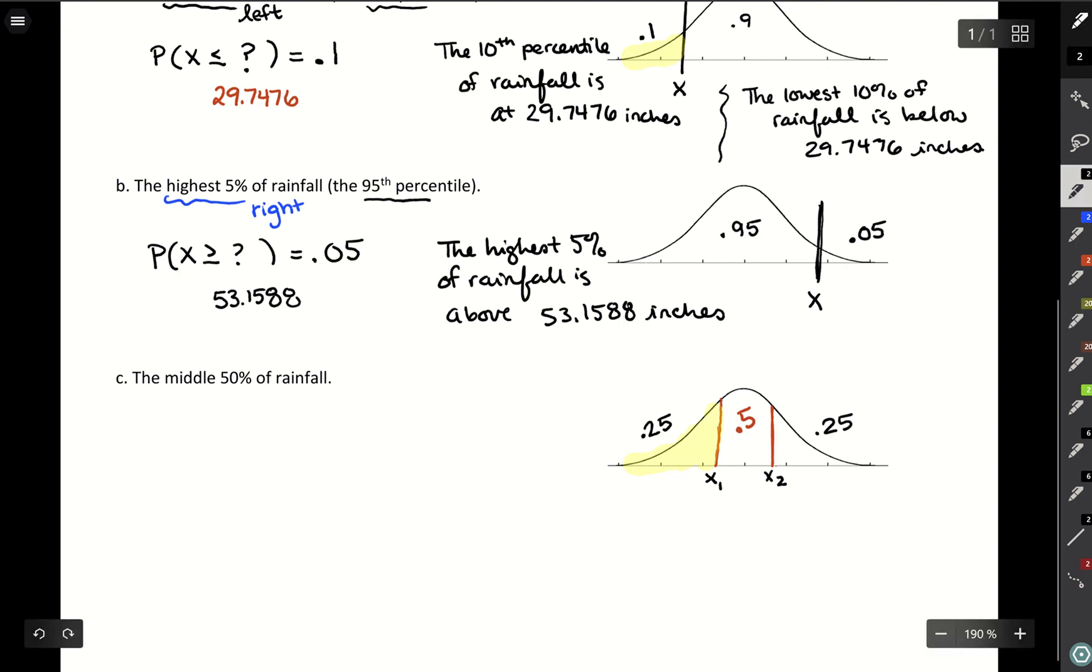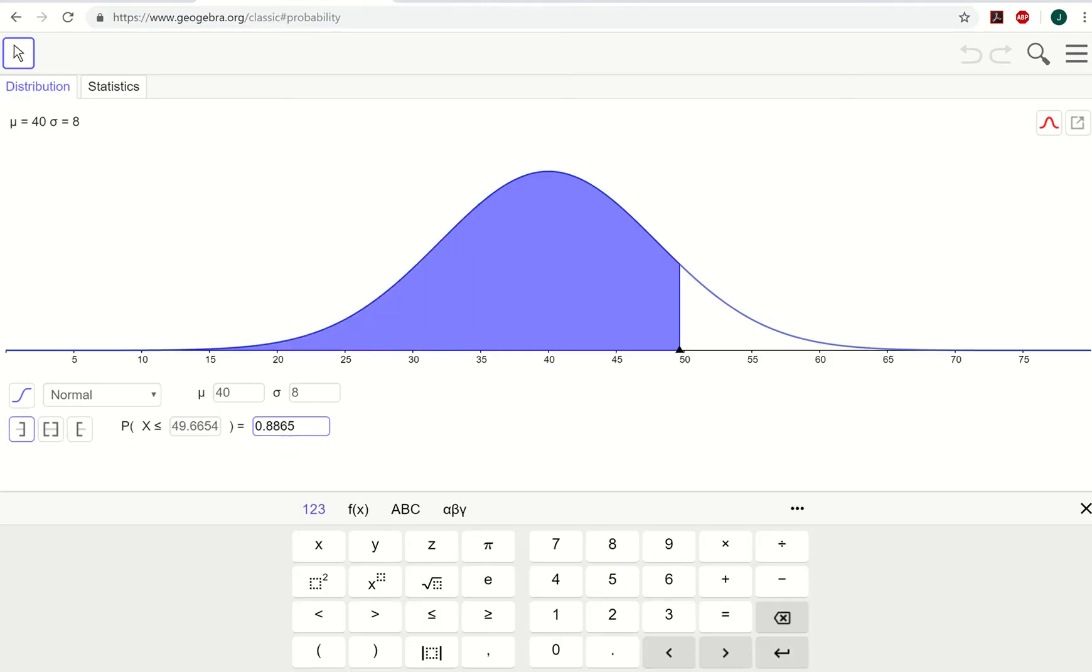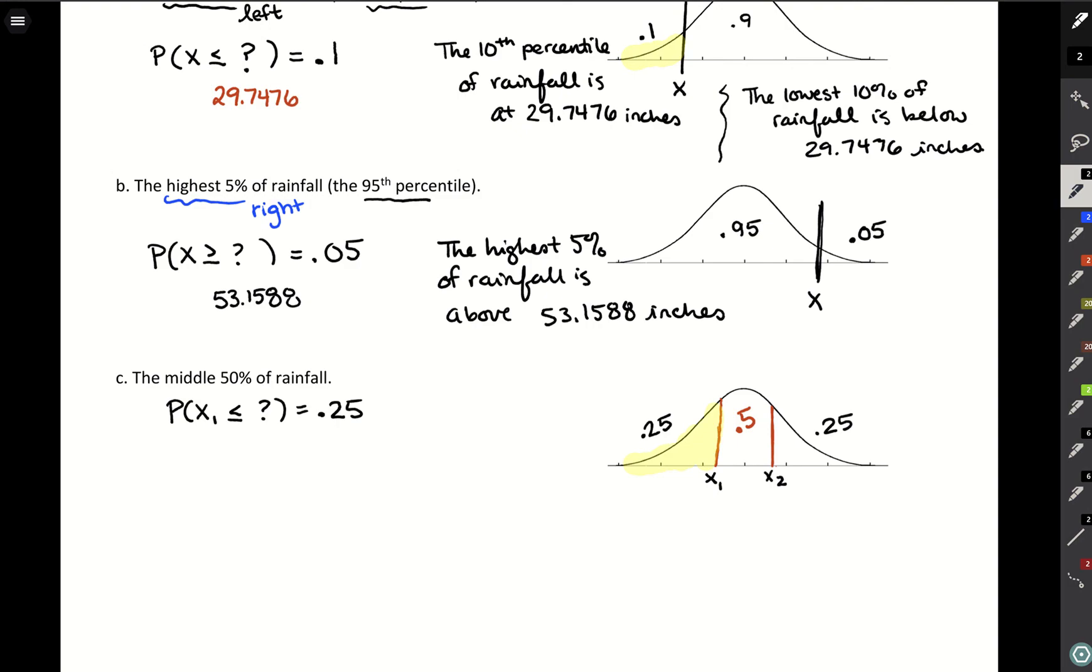So for x1, we can look at less than or equal to some number, and that area should be a 0.25. So with that in GeoGebra, we can work with that. We can work with single tails. So if we set a left hand side and a 0.25, that's a 34.6041, so x1 is that 34.6041.